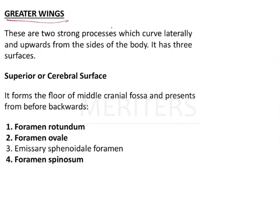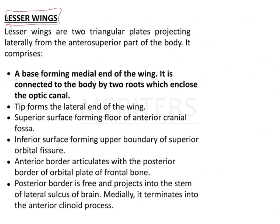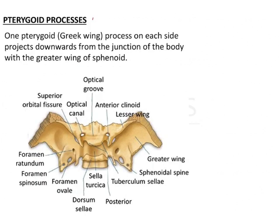Looking at the greater wings — these are two strong processes curved upward from the side of the body. On the cerebral surface they form the floor of the middle cranial fossa and give three major openings: Foramen Rotundum, Ovale, and Spinosum. The lesser wing of the sphenoid has a base forming the medial end, connected to the body by two roots which enclose the optic canal — very important for your exam.